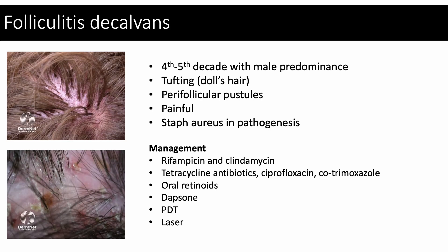Moving on to scarring disorders. Folliculitis decalvans is a painful chronic inflammatory disease leading to scarring hair loss. It tends to occur in the fourth and fifth decade of life with male predominance. Clinically, it presents as tufting of hair, resembling doll's hair, and perifollicular pustules. On biopsy, you will see neutrophilic inflammation. Additionally, Staphylococcus aureus has been implicated in its pathogenesis.